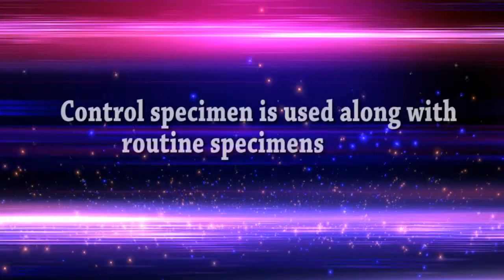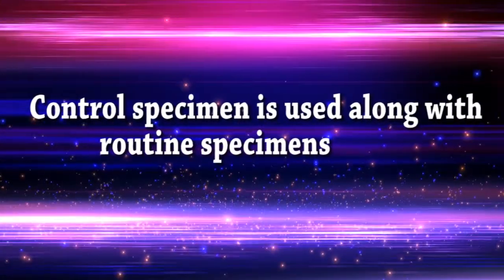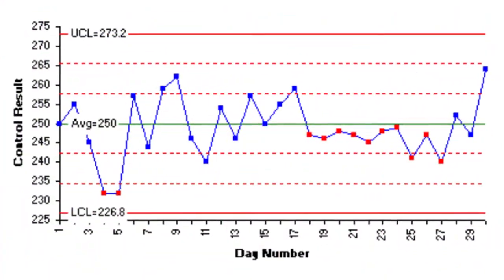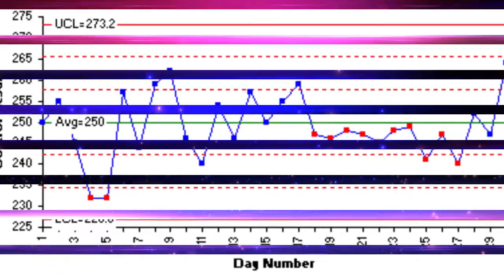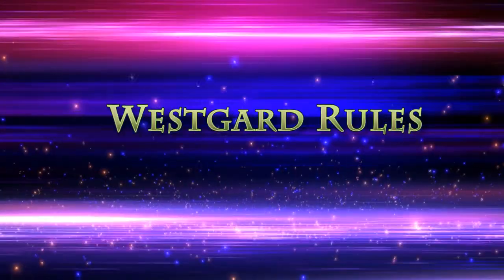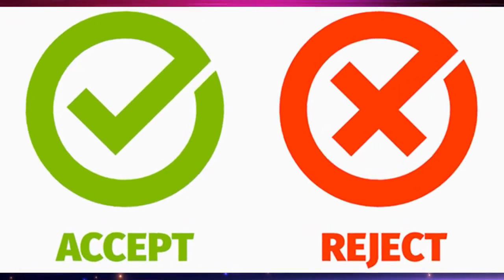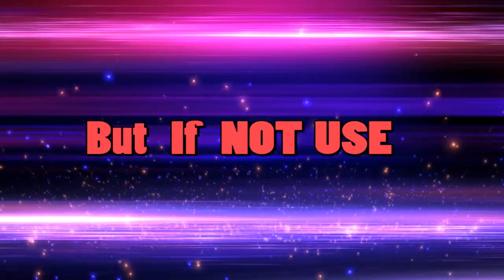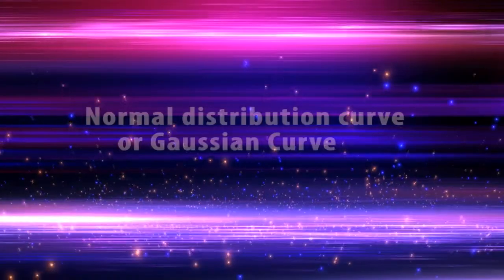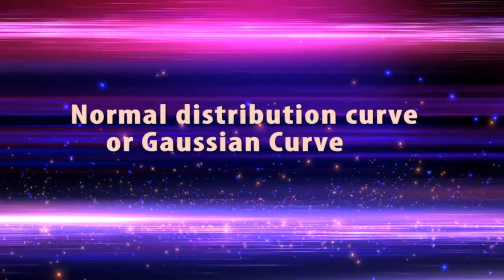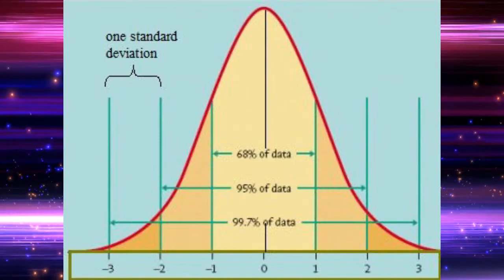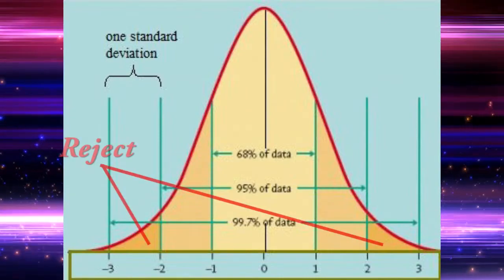Subsequently, the control specimen is used along with routine specimens and plotted on a chart called the Levey-Jennings chart. The Westgard rules are applied to accept or reject results. If Westgard rules are not used, one has to use a normal distribution curve or Gaussian curve.